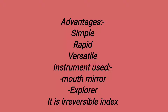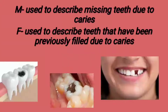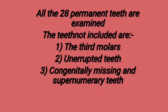One should know that DMFT is an irreversible index. The procedure for calculating DMFT index: DMFT index is applied only to the permanent teeth. It is composed of three components — D describes the decayed teeth, M stands for missing due to caries, and F describes teeth that have been previously filled due to caries.